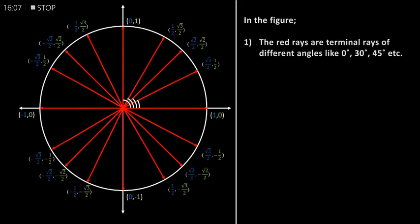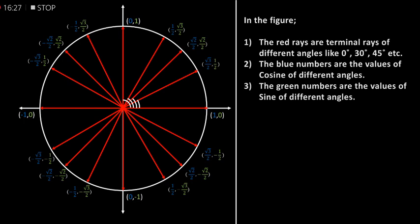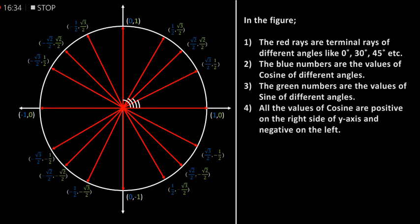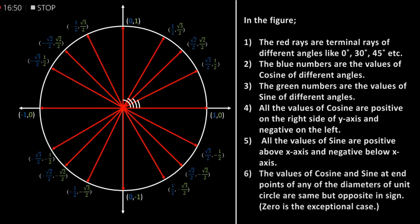In the figure, the red rays are terminal rays of different angles like 0 degrees, 30 degrees, 45 degrees, etc. The blue numbers are the values of cosine of different angles, and the green numbers are the values of sine of different angles. All the values of cosine are positive on the right-hand side of the y-axis and negative on the left. All the values of sine are positive above the x-axis and negative below. The values of cosine and sine at end points of any diameter of the unit circle are the same but opposite in sign. Zero is the exceptional case.